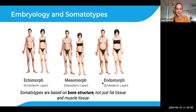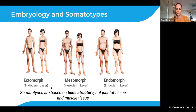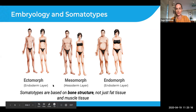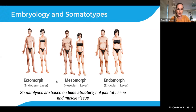These health types, somatotypes, or bio types are measured by measuring the bone structure. The bones won't change due to environmental influences after you have been fully grown, so measuring the skeleton gives us information on bone structure which tells us more about your biotype.